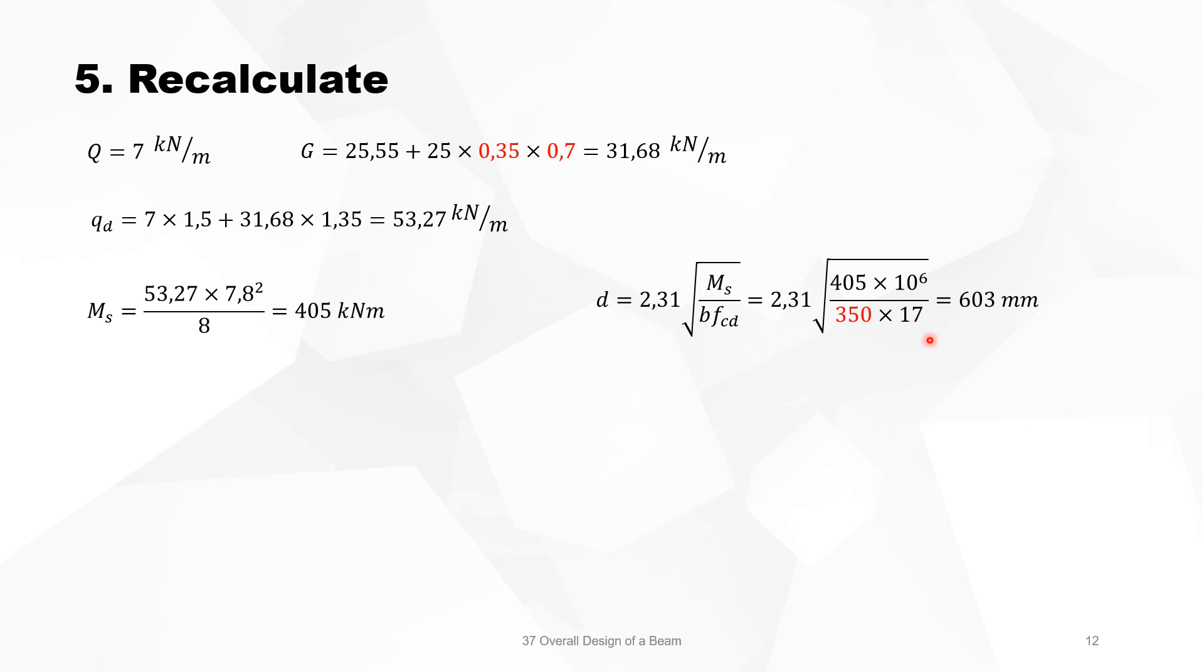The optimum is then, remember the B is now 350, it's now 603 mm, and the total needed depth is now 665 mm, and if we check again the reinforcement that goes with this optimum depth, it's 1731 square millimeters. This means 6×20 or 4×25. So we will take 4×25 diameters.